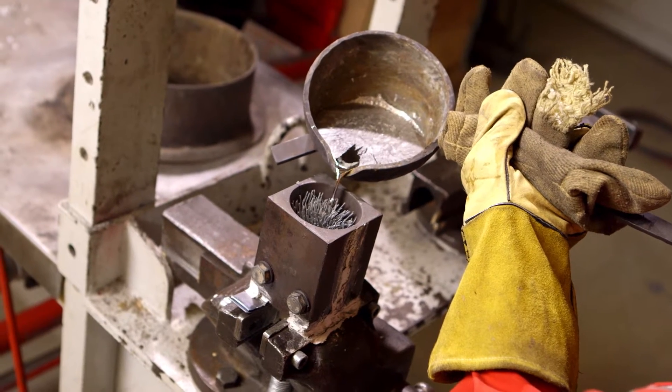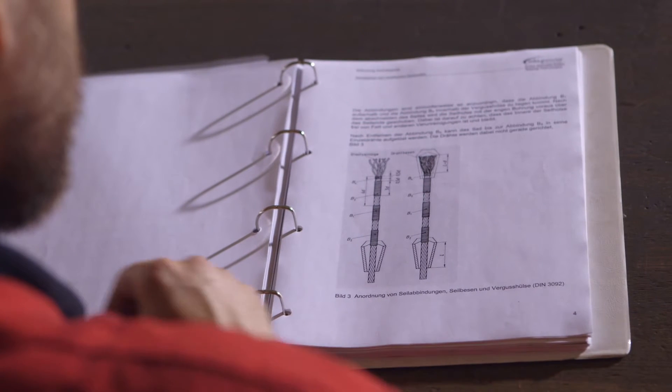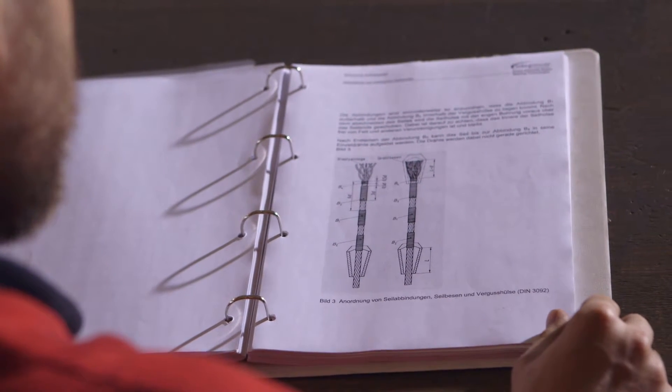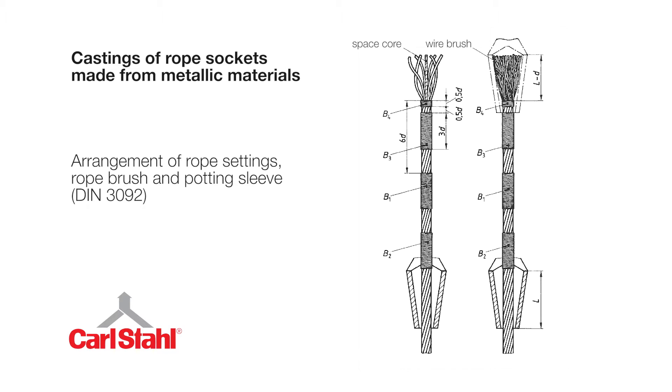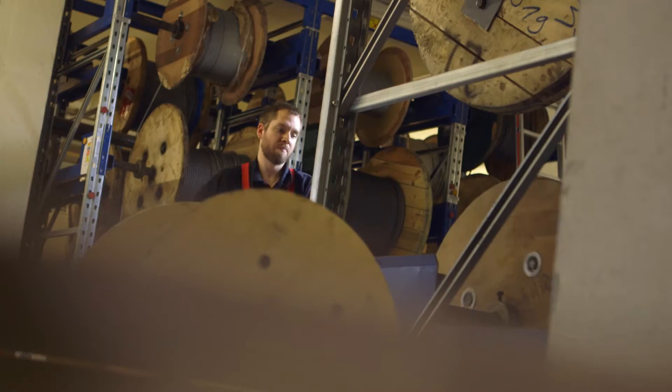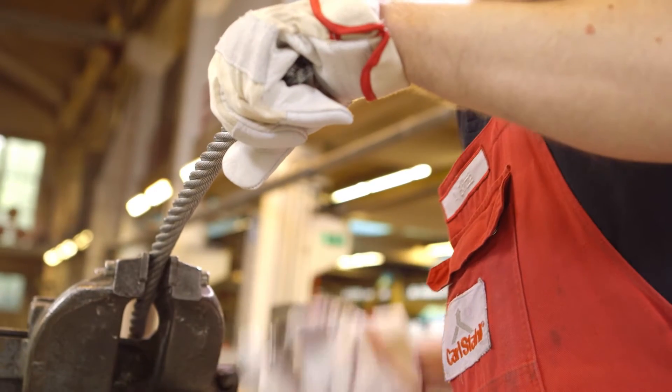The Rope Spelter Socket is a rope end connection in which the broom-shaped rope end is held by the casting compound, metal or artificial resin. All production steps and the correct execution are specified in standards and directives. This procedure takes approximately 4 hours and calls for rope maker training, experience, competence and material.